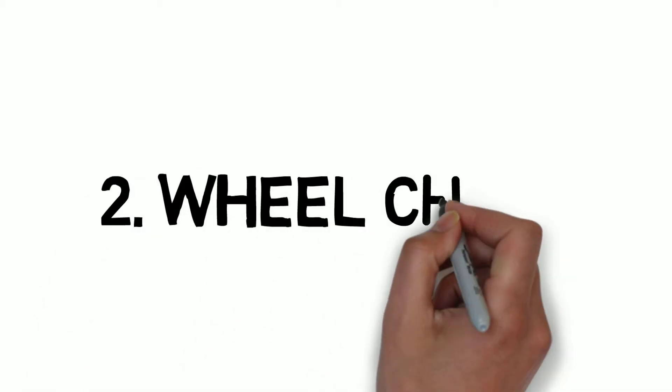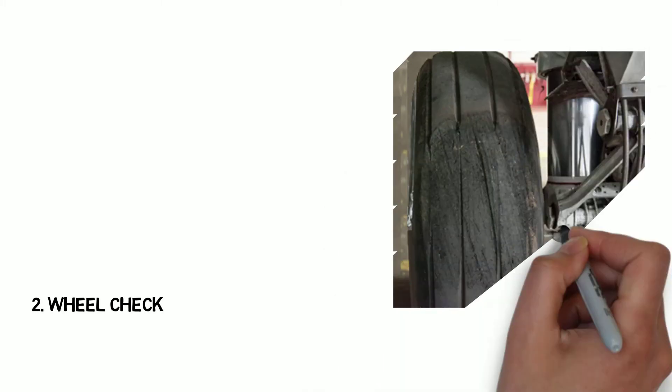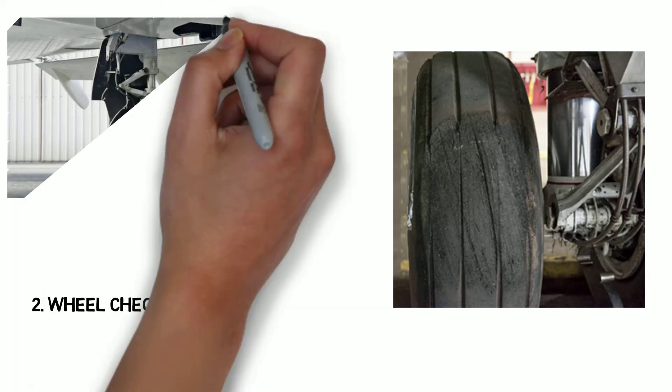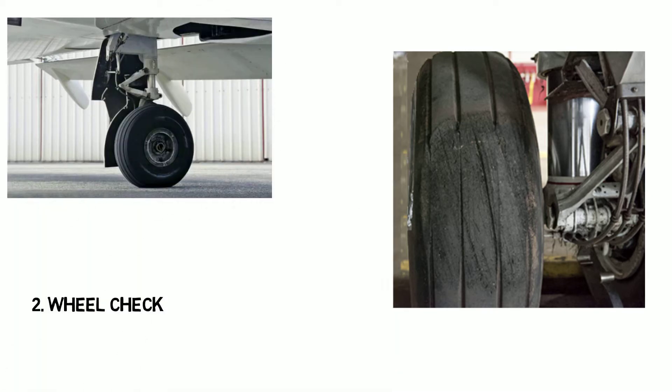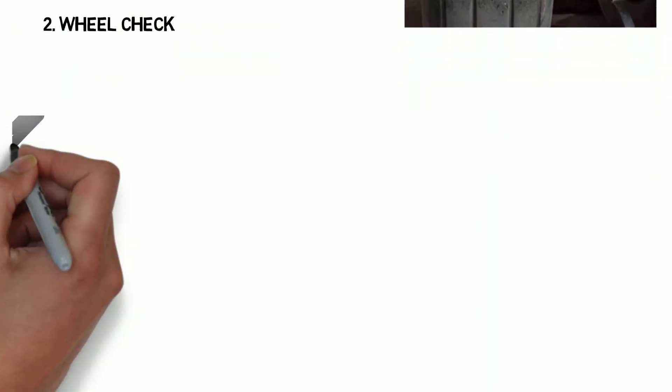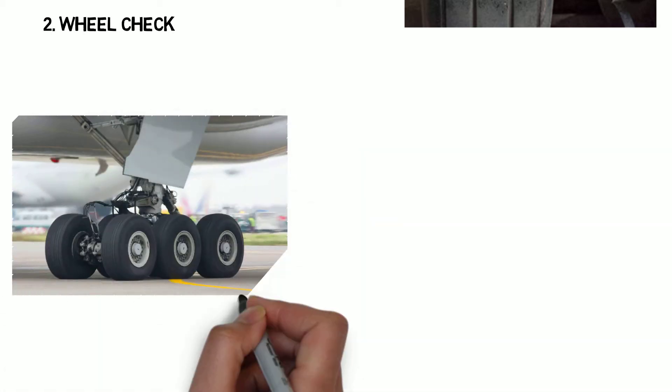Wheel check. Look for wheel assembly, that if tires are not worn out more than normal level. Make sure there is no leakage of fluid from strut. Check the wheel door that there is no abnormality. Aircraft engineer or flight crew should do this for both main gear and nose gear.